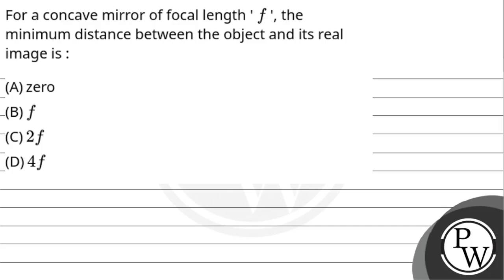Hello, bachyo. Let us read the question. For a concave mirror of focal length f, the minimum distance between the object and its real image is: option A — 0, option B — f, option C — 2f, option D — 4f.